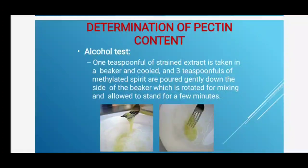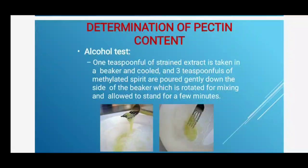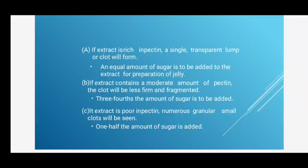The first test is the alcohol test, which involves precipitation of pectin with alcohol. Take one tablespoon of strained extract in a beaker, cool it, then pour three teaspoons of methylated spirit gently down the side of the beaker, rotate for mixing, and allow to stand for one minute. If the extract is rich in pectin, a single transparent lump or clot will be formed.